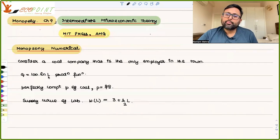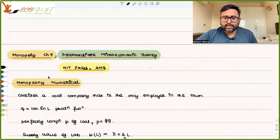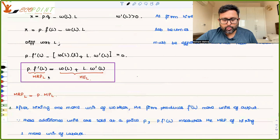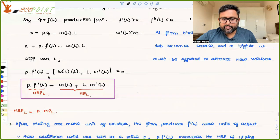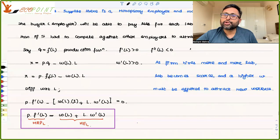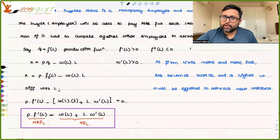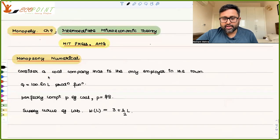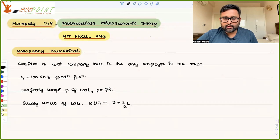Let us now look at the monopsony numerical. This is in continuation of the class which we took yesterday, in which we have derived the mathematical condition for the monopsony equilibrium. Let's do a simple numerical based on this.